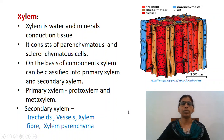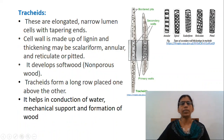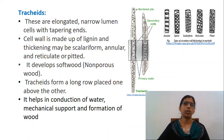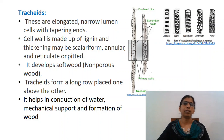Out of the four components, only xylem parenchyma is living and the rest of the components are dead. Tracheids are elongated, narrow, lumen cells with tapering ends. Cell wall is made up of lignin and thickening may be scalariform, annular, reticulated or pitted. Tracheids are formed in pteridophytes, gymnosperms and angiosperms. They develop into softwood or non-porous wood. Tracheids form a long row placed one above the other. They help in conduction of water, provide mechanical support and also help in formation of wood.